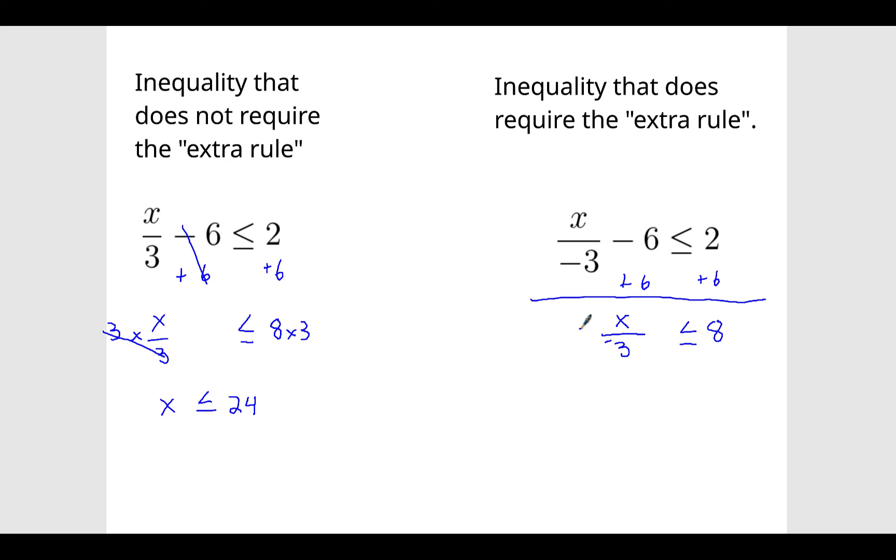And so now we have x divided by a negative 3 is less than or equal to 8. So just like we did, we're going to now multiply, but this time it's by a negative 3. When we do that, that triggers us to switch the sign.